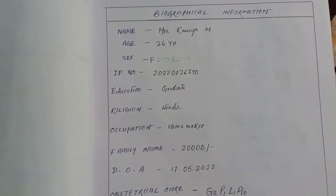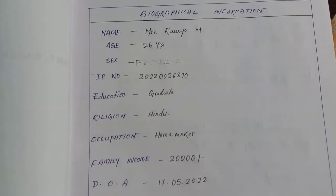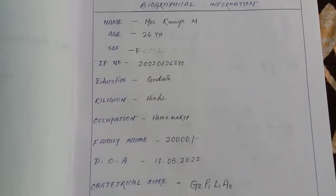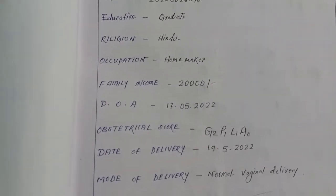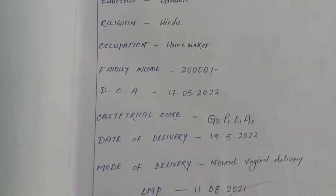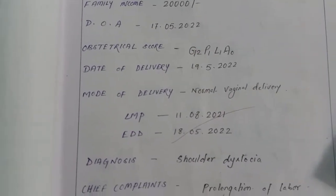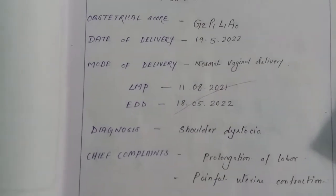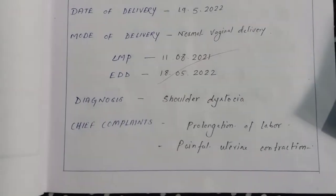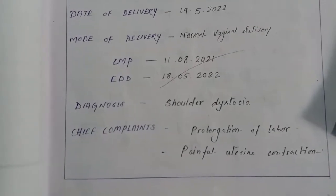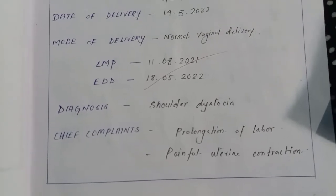Biographical information: name Mrs. Ramaya M, age 26 years, sex female, IP number, education, religion, occupation, family income, date of admission, obstetrical score, date of delivery, mode of delivery, LMP, EDD. Diagnosis: shoulder dystocia.